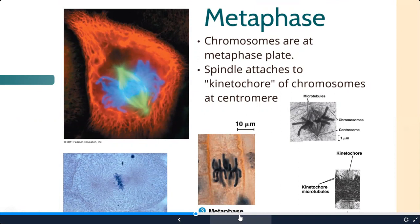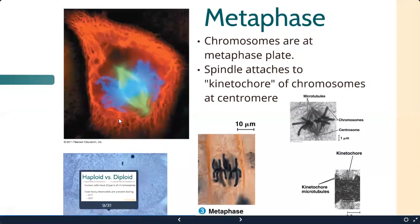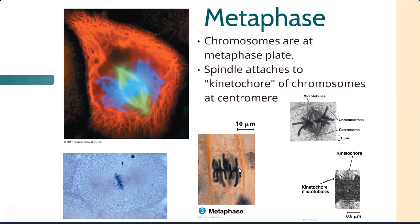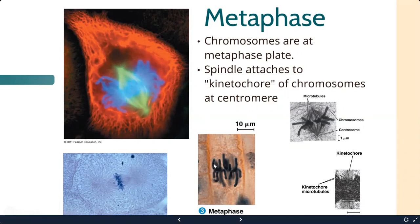Metaphase is easy to identify - all chromosomes are aligned at the center of the cell, which is called the metaphase plate or equator. The centrioles are visible along with the spindle fibers, and the chromosomes line up with their centromeres at the plate while the chromosome arms extend outward. Remember the cell is 3D, so chromosomes are arranged in a plane, not a single line.